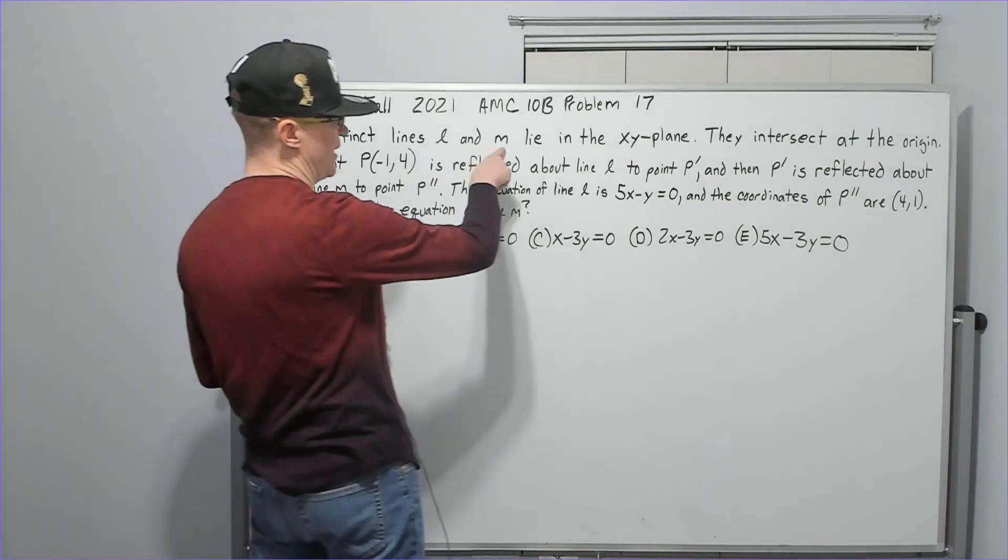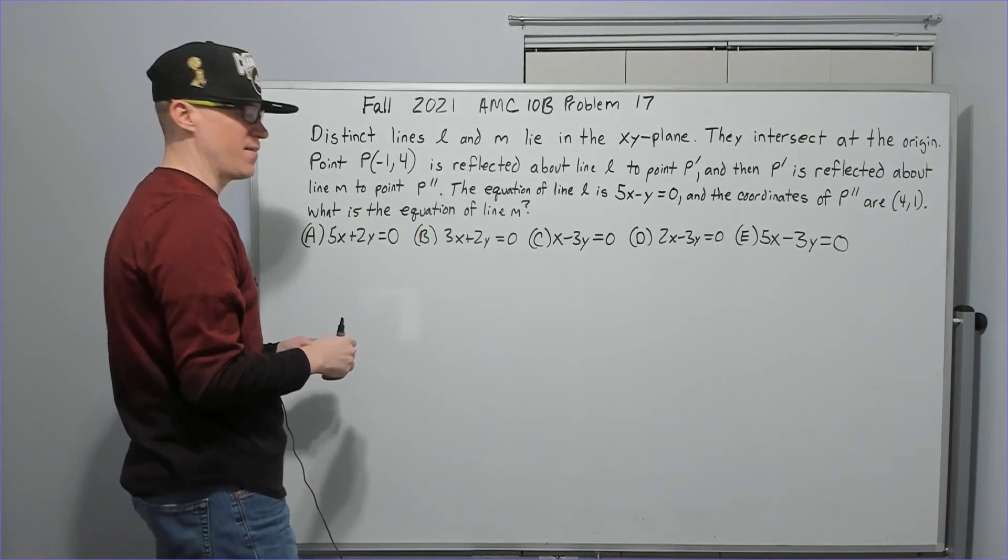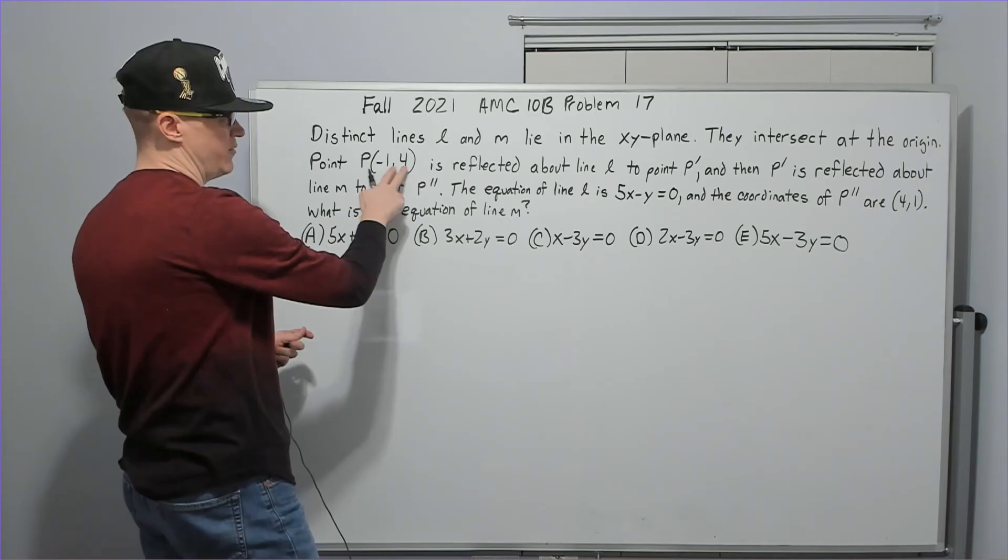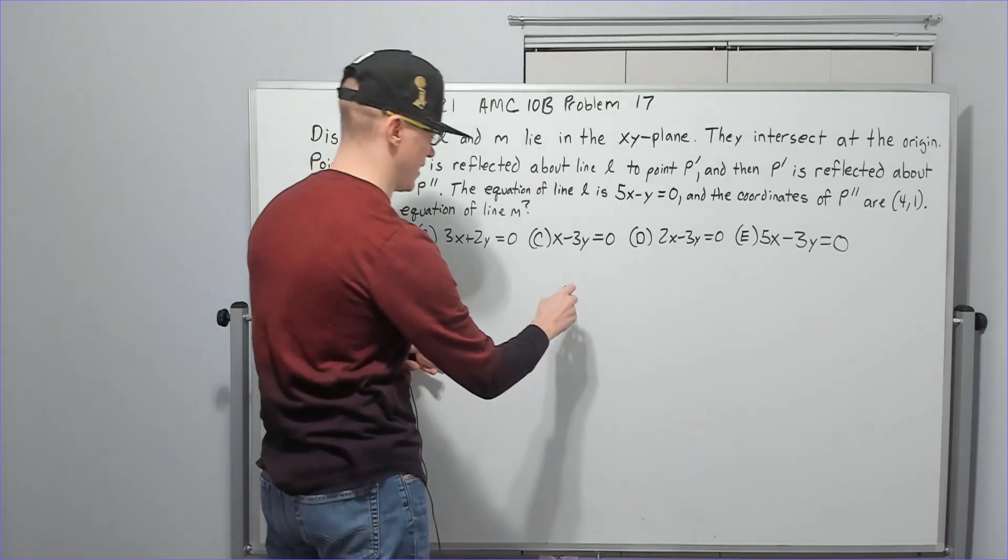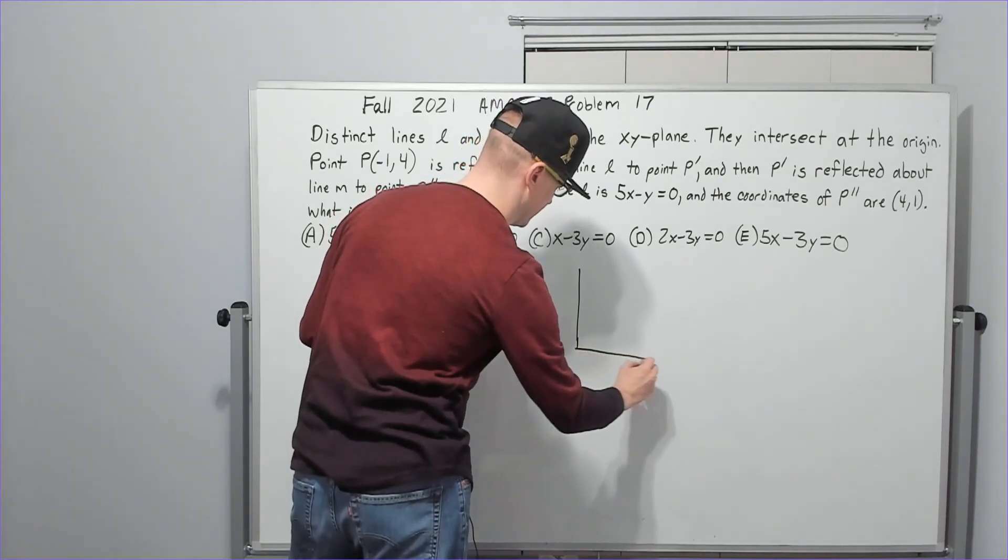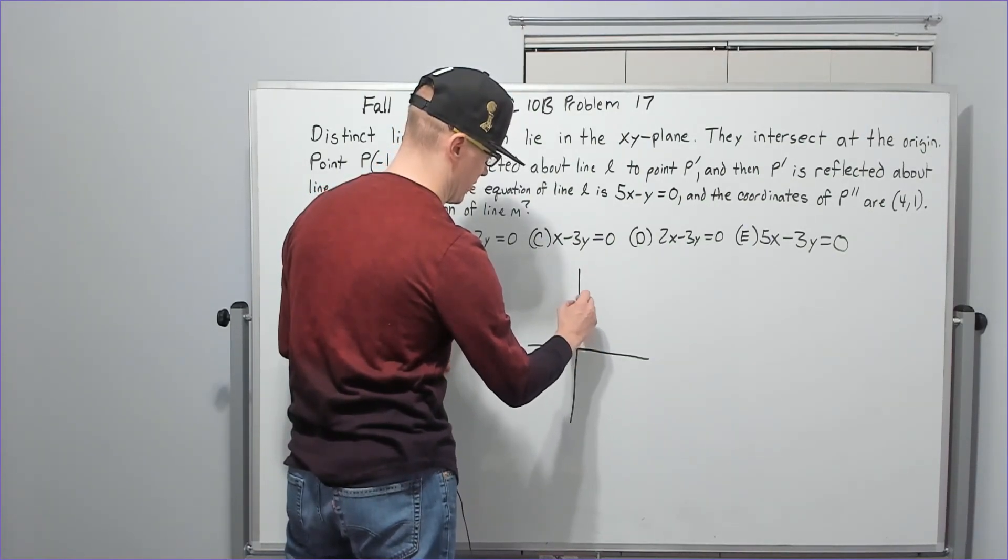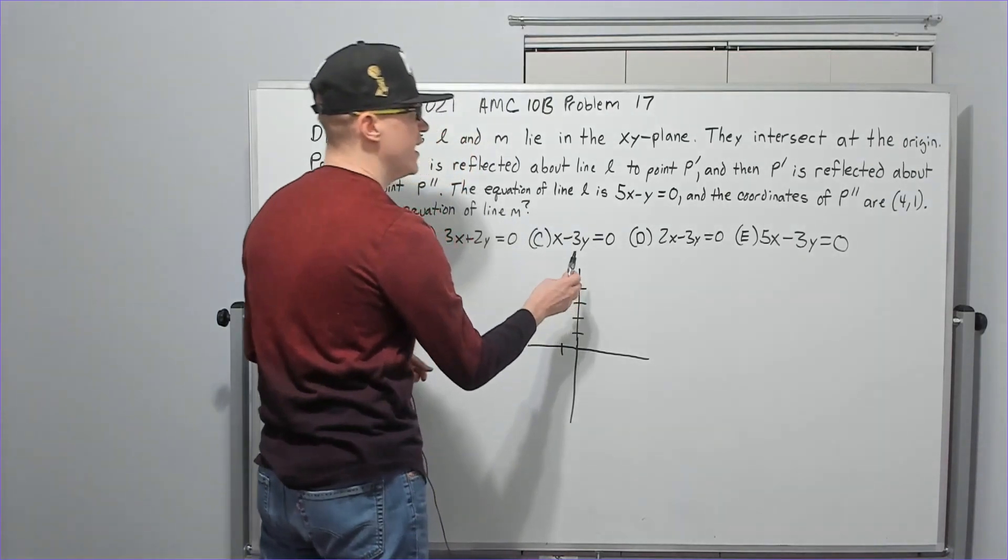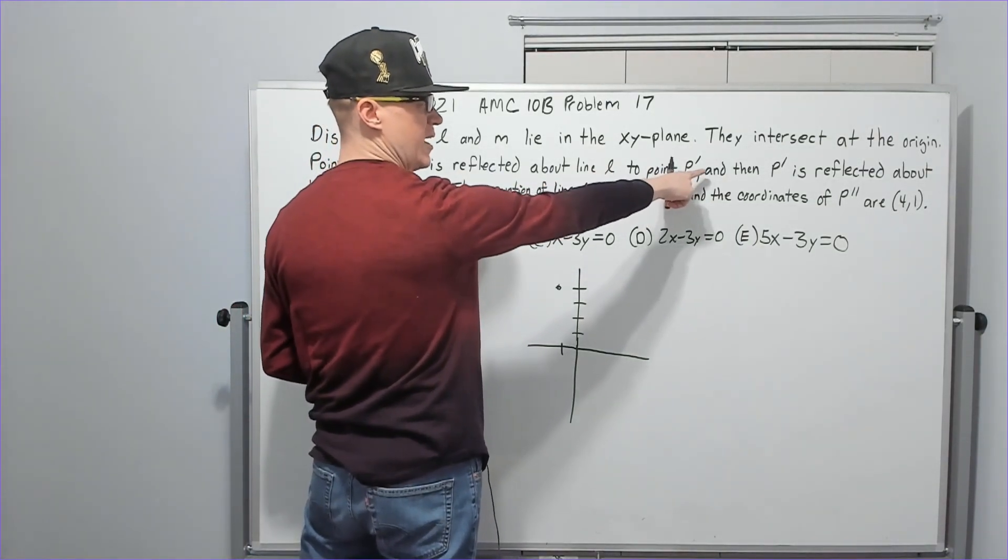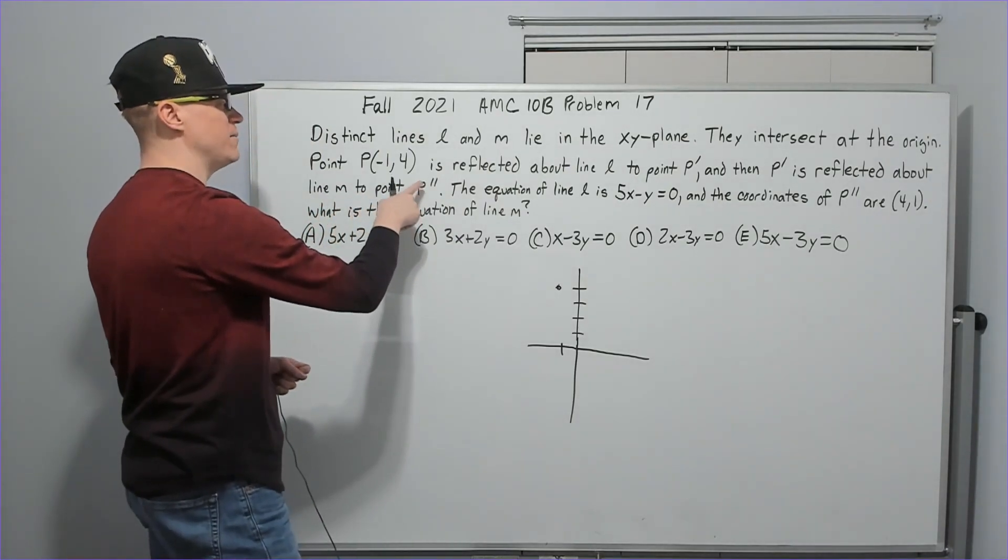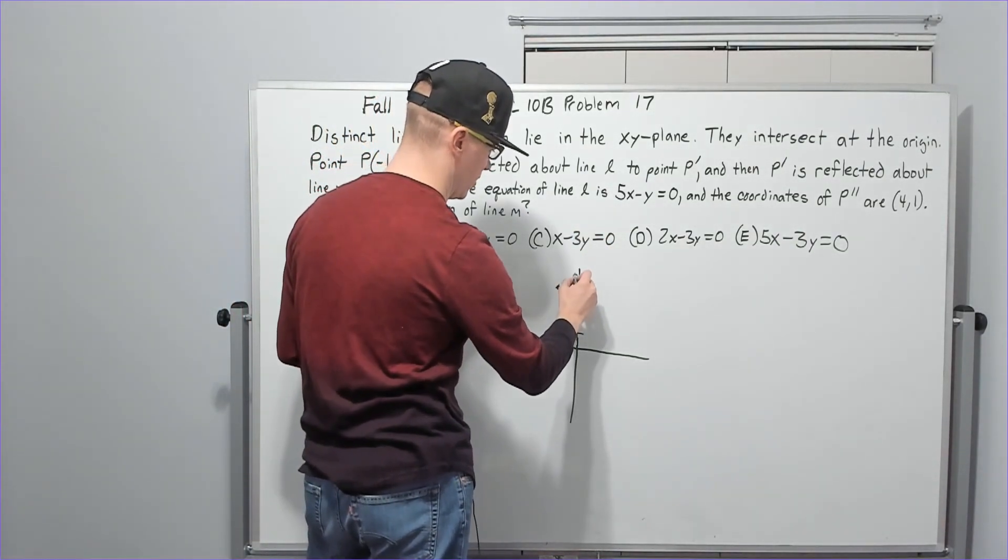So, distinct lines L and M lie in the XY plane. They intersect at the origin. I think we had something like that happen in the A test. Point P, negative 1, 4, is reflected about line L to point P prime. Okay, let's kind of draw what's going on here. We've got the first quadrant, second quadrant. Alright, whatever. Negative 1, 1, 2, 3, 4. You've got a point about right here. It says, then what? Where's L though? Let's keep reading. About line L to a point P prime, and then P prime is reflected about line M to a point P double prime. The equation of line L is Y equals 5X.